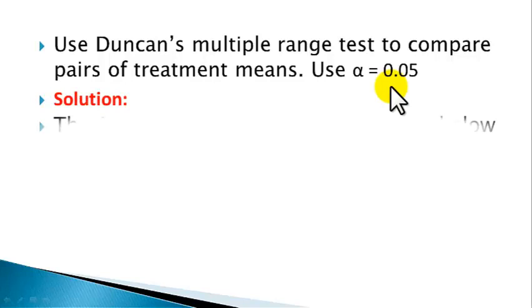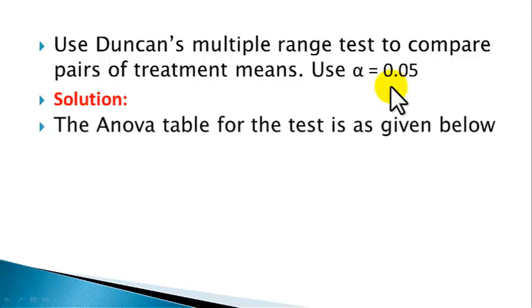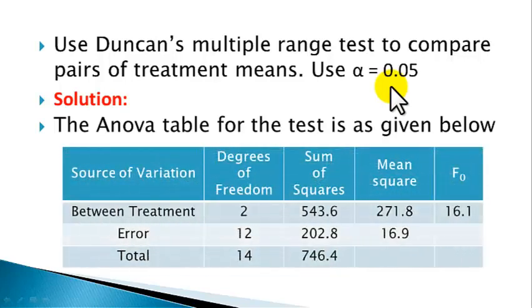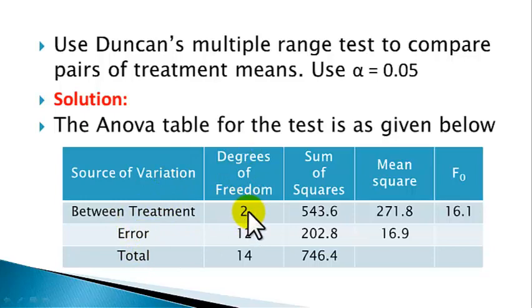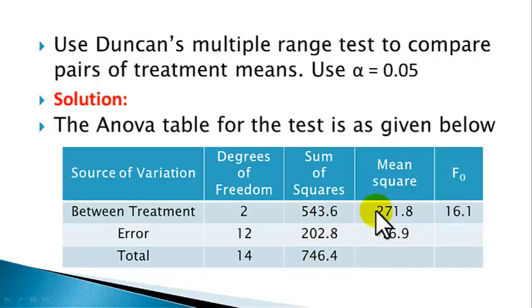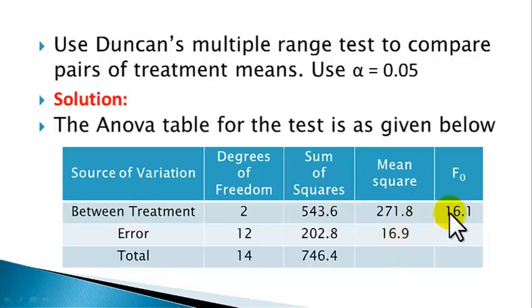Solution: The ANOVA table for the test as obtained previously is given below. Source of variation: between treatment, error, and total. Degrees of freedom: treatment is 2, error is 12, total is 14. Sum of squares: treatment is 543.6, error is 202.8, total is 746.4. Mean square: treatment is 271.8, error is 16.9. The F-value, which is 271.8 divided by 16.9, is 16.1.